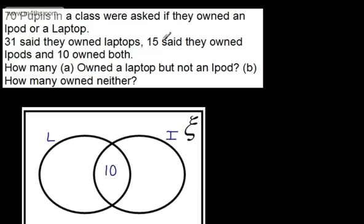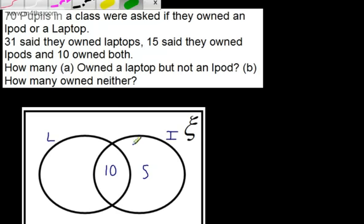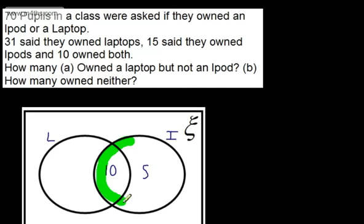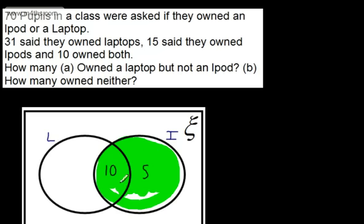Now we know 15 said they owned an iPod. The killer mistake here is to write 15 in the iPod circle. Remember, we've already got 10 in the intersection, so we only need 5 in the iPod-only section. If we shade the iPod area, we can see 15 people in total: 10 of them also own a laptop, and 5 own just the iPod.